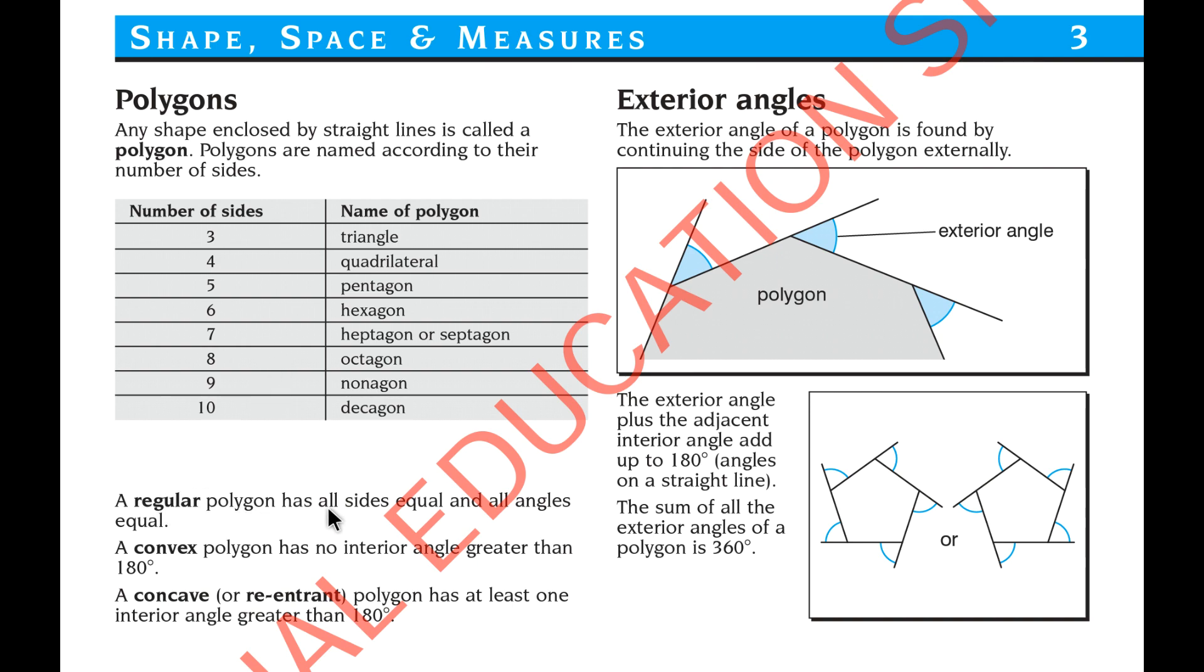A regular polygon has all sides equal, all interior angles equal to each other, and all exterior angles equal to each other. Always make sure there are three requirements for a regular polygon: all sides should be equal, all interior angles should be equal to each other, and all exterior angles should be equal to each other.